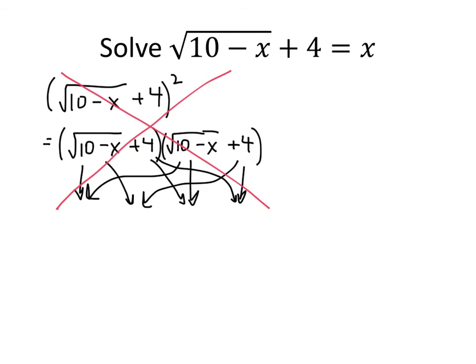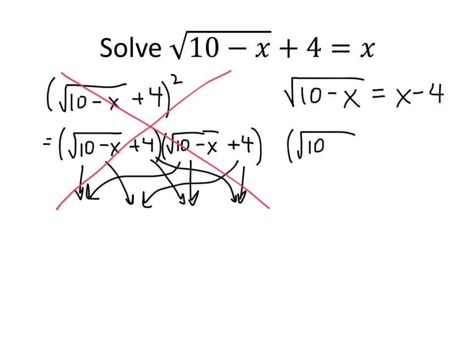We don't want to jump in and square both sides right away. Instead, we need to make this look like the previous example by first subtracting 4 from both sides — in other words, getting the square root term by itself. Now that the square root of 10 minus x is isolated, we can square both sides without ending up with a messy result.